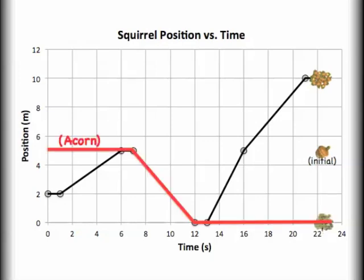If I wanted to see the position versus time graph for the acorn, the one that actually moved, we could look at it here. Remember, it started at position five meters, and it sat there until it was picked up by the squirrel. Then it tracks the same line that the squirrel did until it gets to the tree where it stays stationary for the remainder of the time.